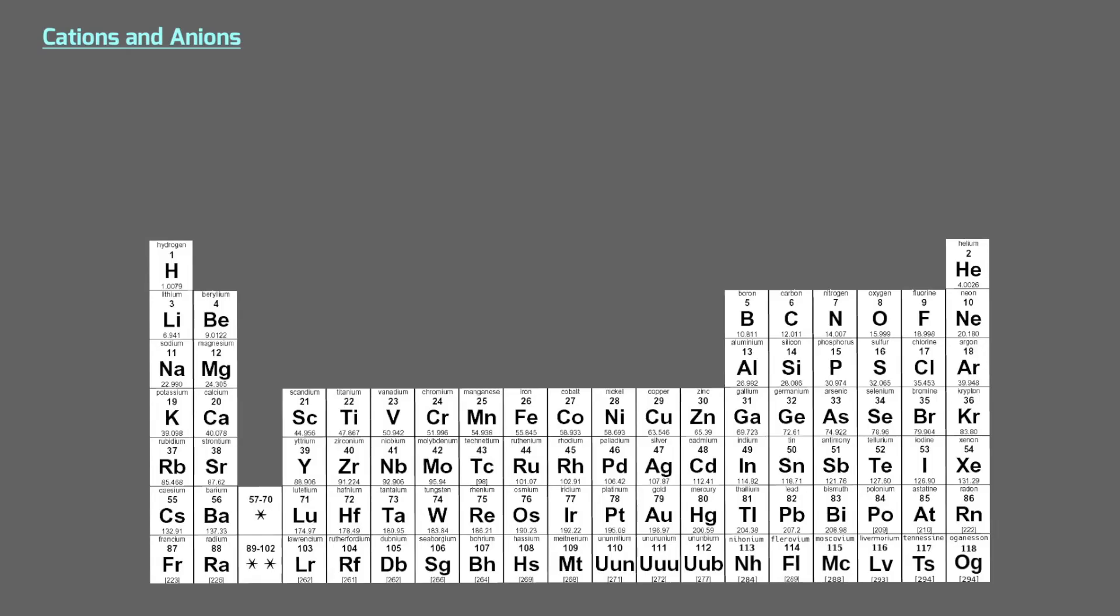We can use the periodic table to see how many electrons a main group element may lose. Elements found in the first column of the periodic table, also called alkali metals, have only one valence electron. They lose this electron and become a cation with a plus-one charge.